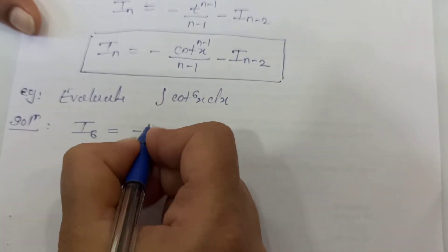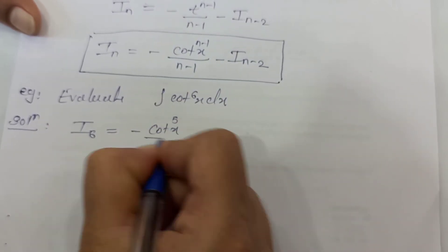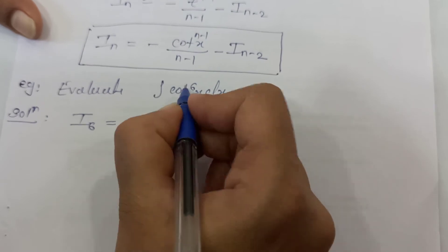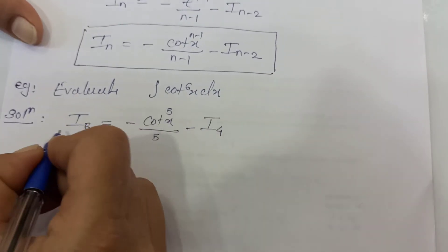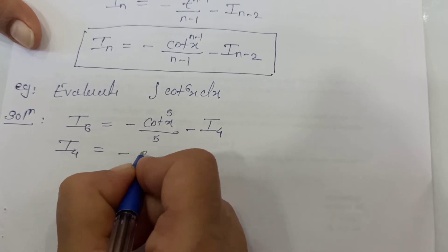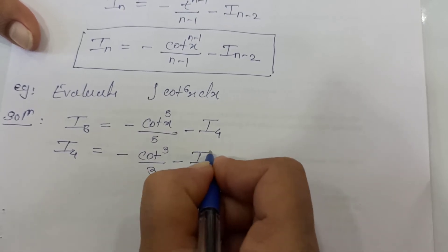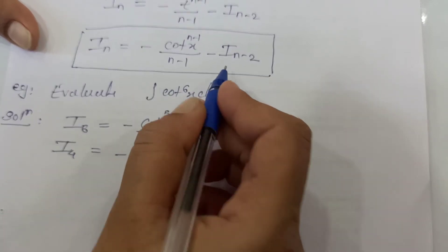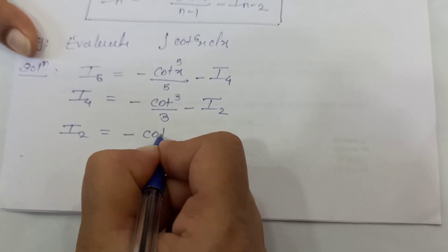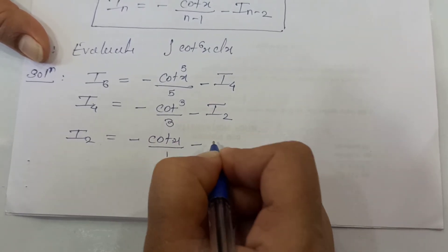With n equals 6: I₆ equals minus cot raised to 5x upon 5, minus I₄. Now evaluate I₄ using the same formula with n equals 4: I₄ equals minus cot raised to 3x upon 3, minus I₂. Then evaluate I₂ with n equals 2: I₂ equals minus cot raised to 1x upon 1, minus I₀, which simplifies to minus cot x minus I₀.